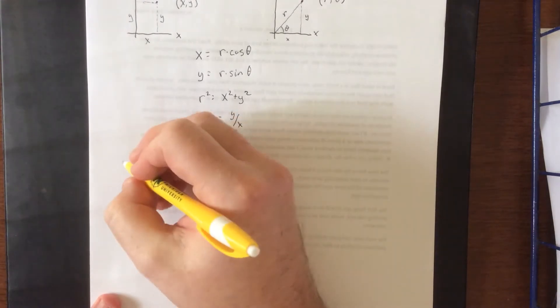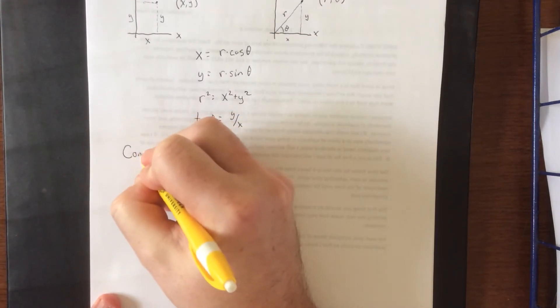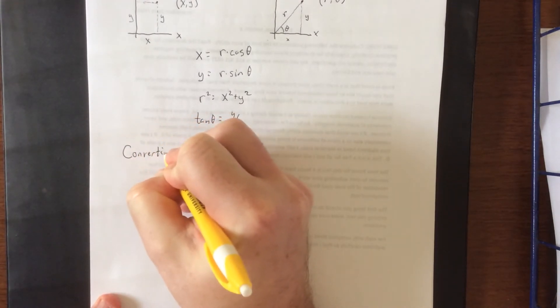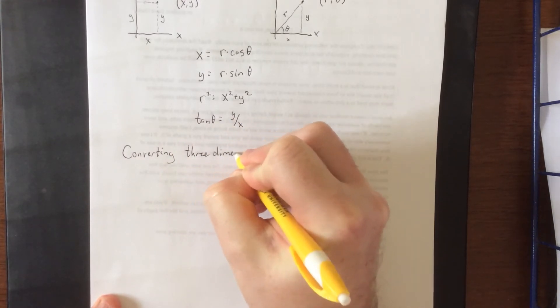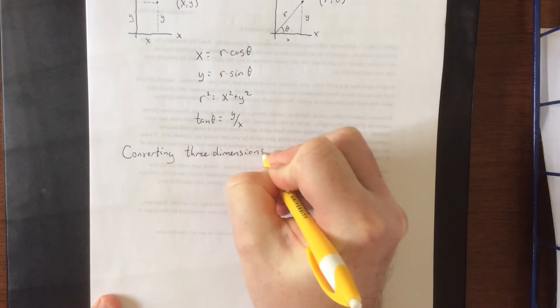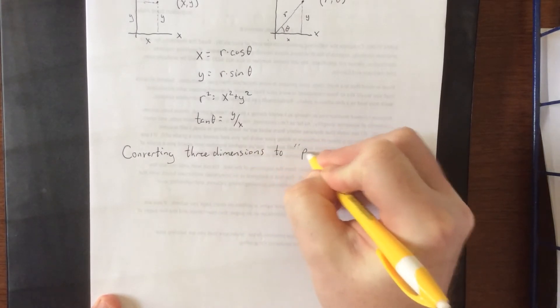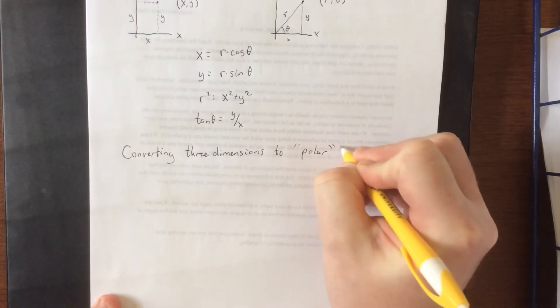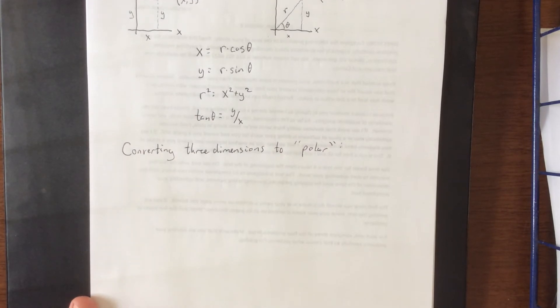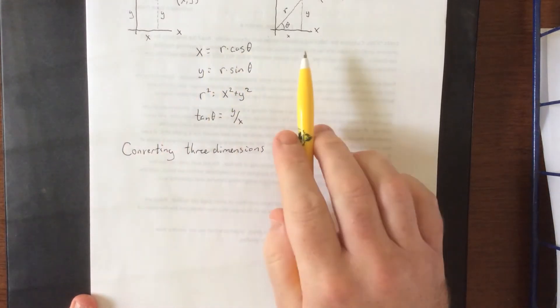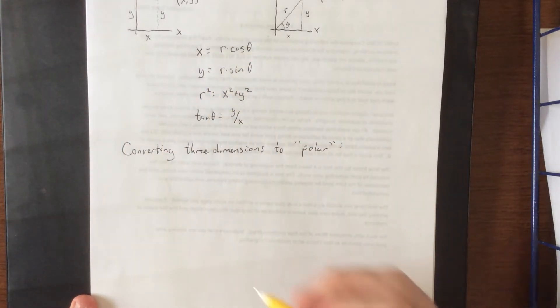Now, with that in mind, converting three dimensions to polar coordinates. The first coordinate system that we're going to introduce for three dimensions is exactly polar coordinates where we leave the z as is.